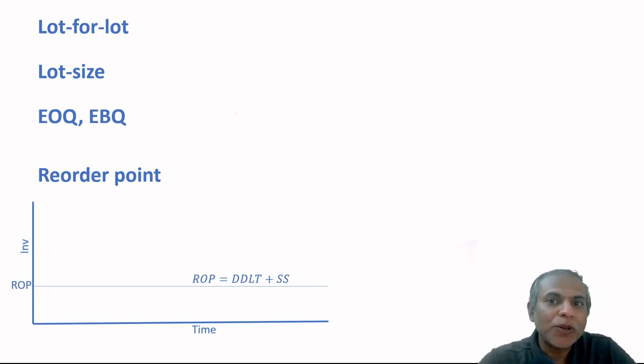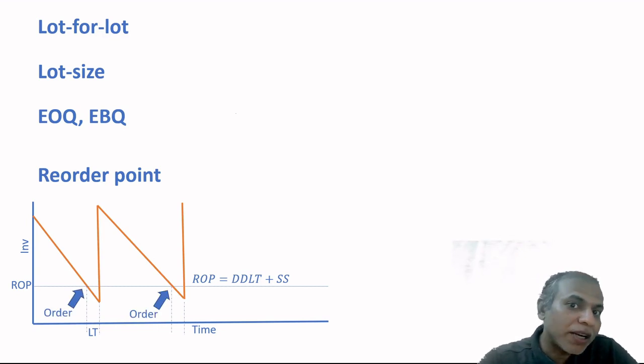Let's suppose my daily usage is 10 units. In a perfect world, I'll put the reorder point at 30 units. Whenever I'm at 30 units I reorder, and when I get to zero precisely, this new quantity arrives from the supplier and my inventory goes up again. We're not in a perfect world, so we need to add safety stock. So demand during lead time plus safety stock, that's what my reorder point is. Whenever I reach my reorder point, I place an order again.